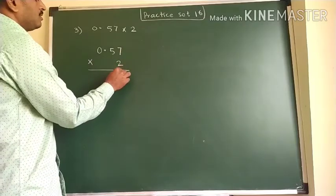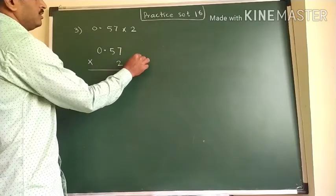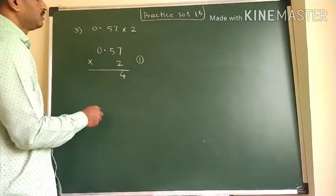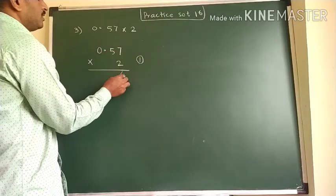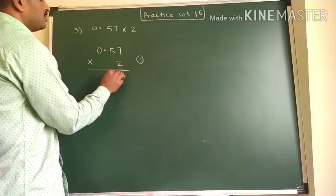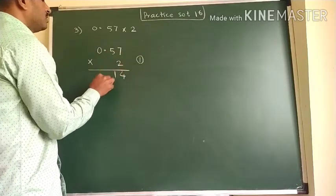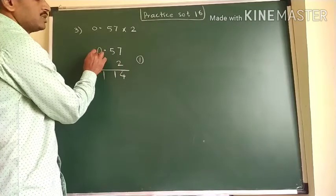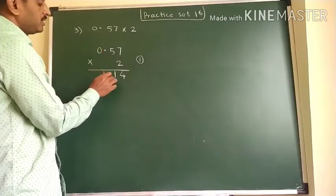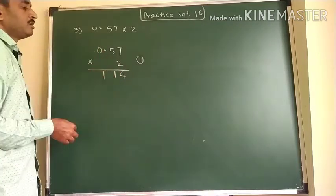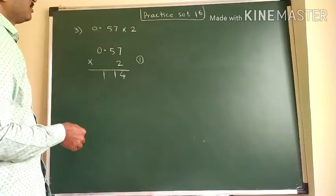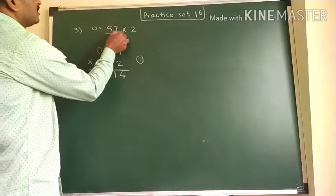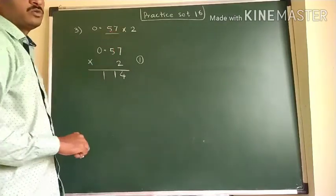2 sevens are 14, 1 is the carry. 2 fives are 10, 10 plus 1 is 11. Since 0 is there, we are writing 11 here directly.